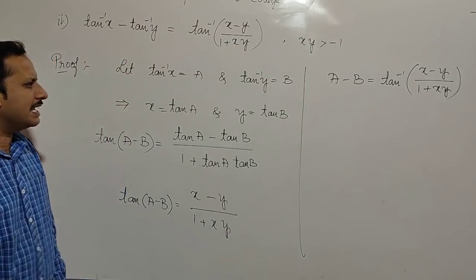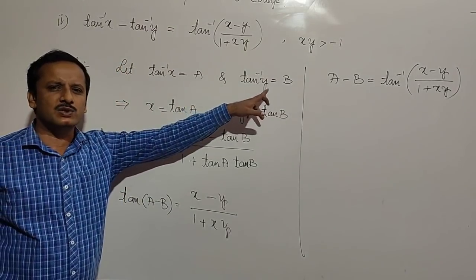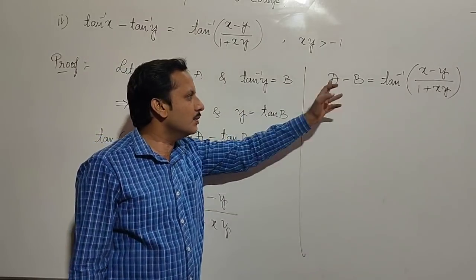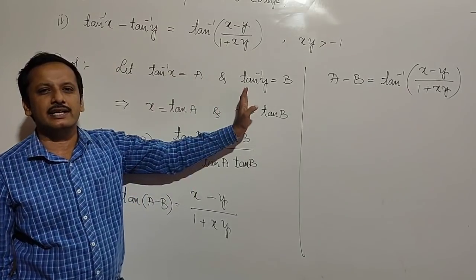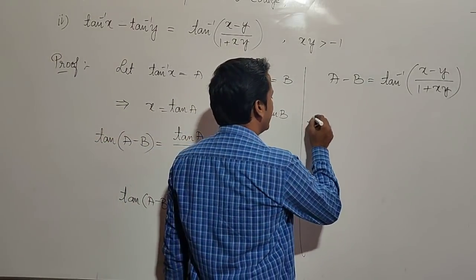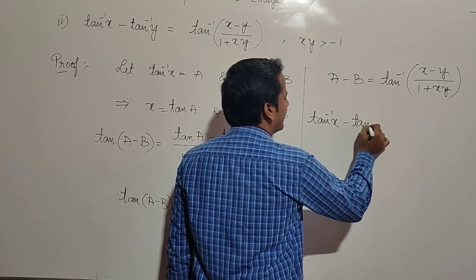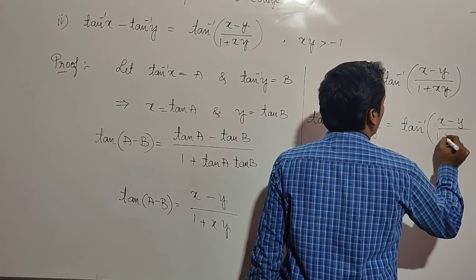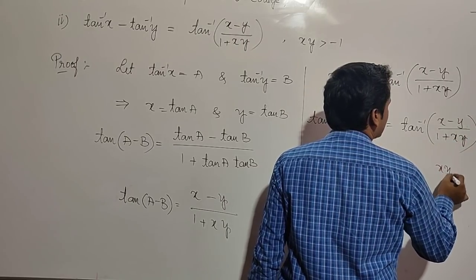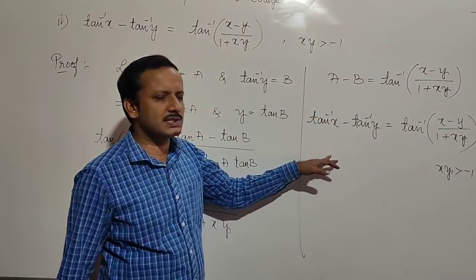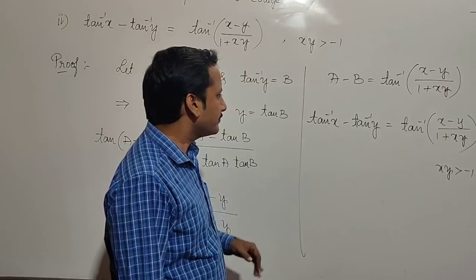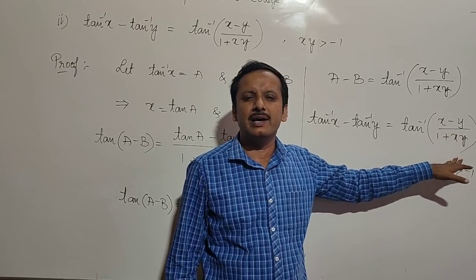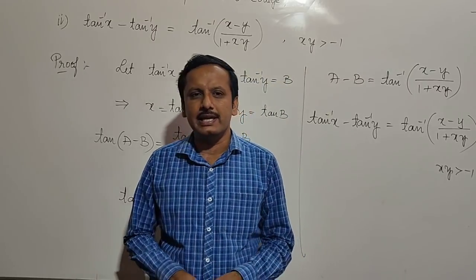Replacing a and b with tan inverse x and tan inverse y respectively, we get tan inverse x minus tan inverse y equals tan inverse of x minus y divided by 1 plus xy, whenever xy is greater than minus 1. This is exactly what we wanted to prove.